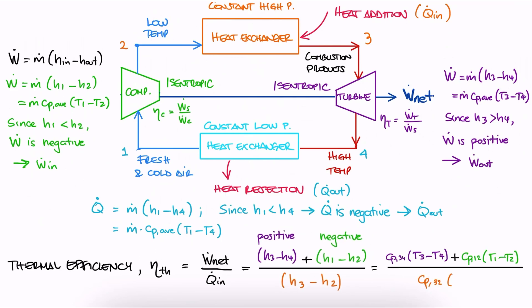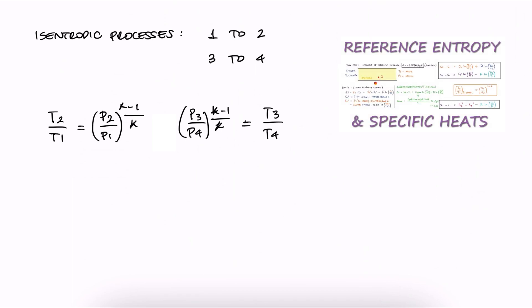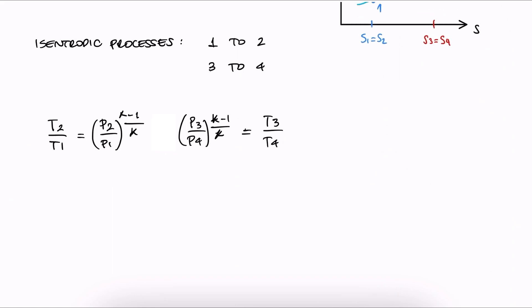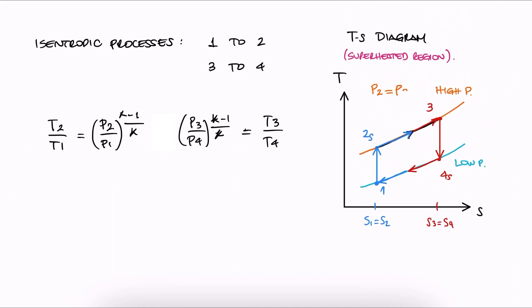The other tool we have to find the pressure and temperature values we need is what we learned about isentropic processes and the pressure-temperature relationships. Since p2 and p3 are the same and p1 and p4 are the same, we can expand this to subscripts 3 and 4. This is what we would use assuming constant specific heats.